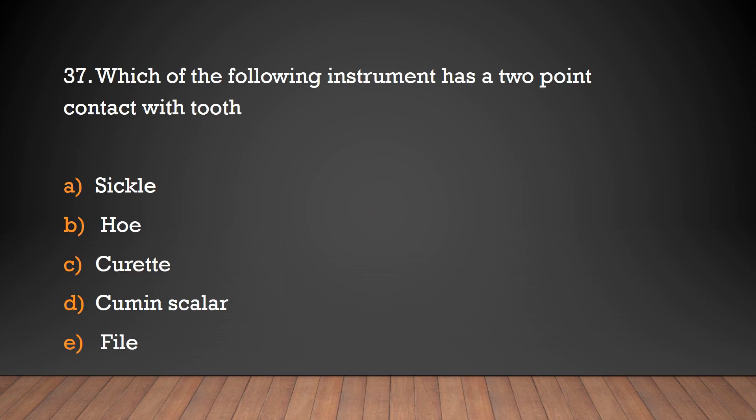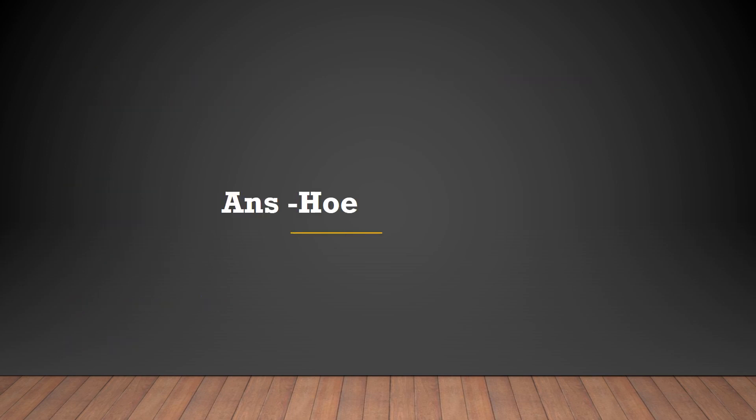Which of the following instruments has a two-point contact with the tooth? Sickle, hoe, curette, ultrasonic scaler, or file. The answer is hoe — hoe has two-point contact with the tooth.